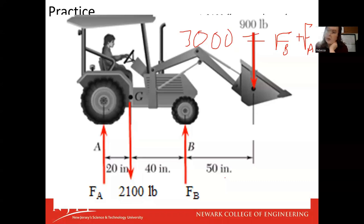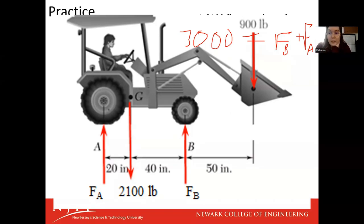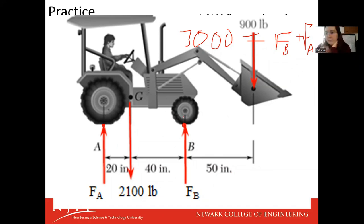Then the next thing we have to do is the summation of moments. In this case, no matter what we did, we would have enough information to solve for both of these. It'll make it easier to solve if we use either point A or point B as our point of analysis for our moment. Our summation of moments also needs to be zero. If we do our summation of moments at point A, F_A gives zero moment impact, so we'll have one equation to solve for F_B. Likewise, if we analyze point B, F_B would have no moment impact, so we would be able to solve for F_A.